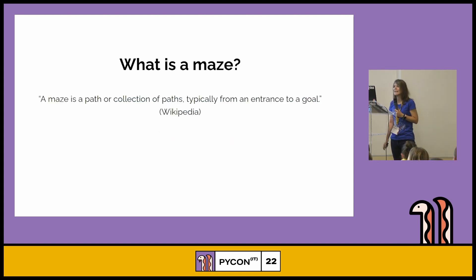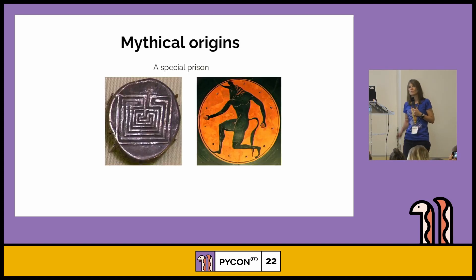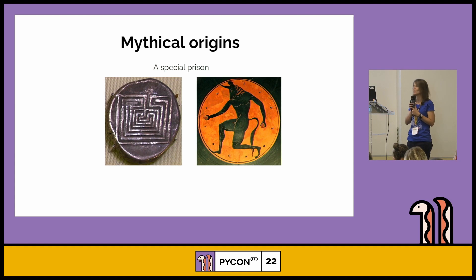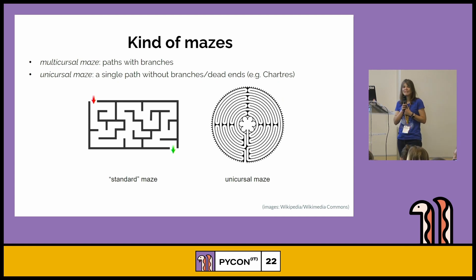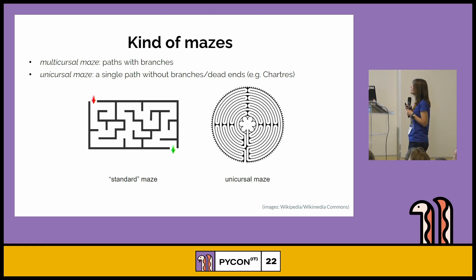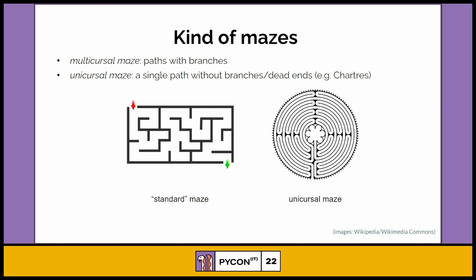First let's define what is a maze. A maze is a path or a collection of paths, typically from an entrance to a goal, according to Wikipedia. The maze was built for a very special purpose — for a monstrous being, the Minotaur — and King Minos ordered Daedalus to construct it. When we talk about mazes we have to differentiate between two kinds: the multicursal one, with paths and branches like in magazines, and the unicursal one, found in medieval contexts and associated with spiritual paths.